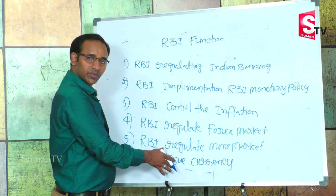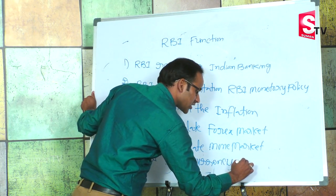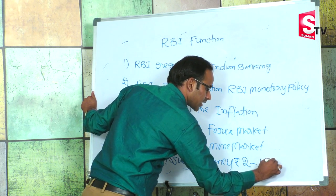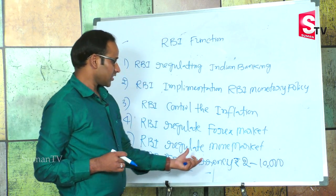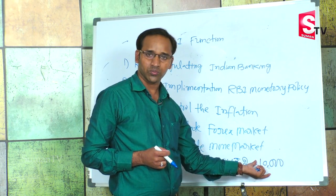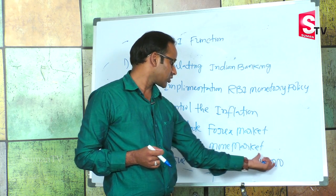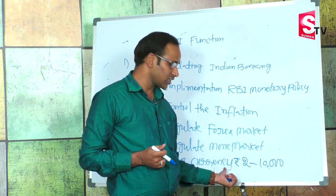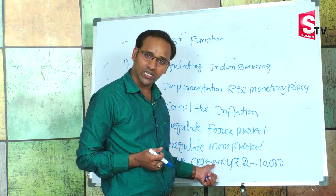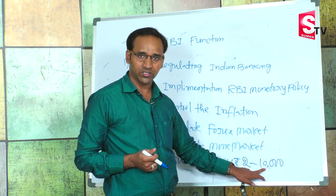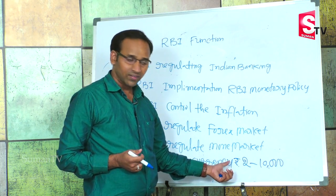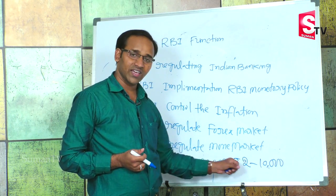The RBI issues different types of currency notes. We may expect a question on this. The minimum value of currency notes printed by the RBI is 2 rupees and the maximum value is 10,000 rupees. The 10,000 rupee currency note was already demonetized in 1946 and 1978.